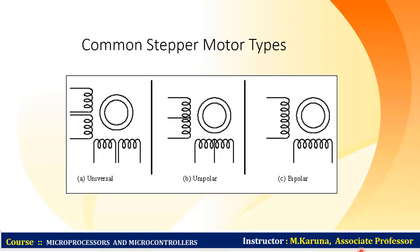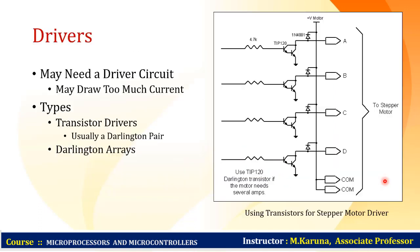These are the common stepper motor types: universal type, unipolar, and bipolar. The operating voltage of the controller is 5 volts, but to rotate a stepper motor we need more than 5 volts. That is why we use driver circuits, because the stepper motor may draw too much current. Different types of driver circuits include transistor driver circuits and Darlington arrays.